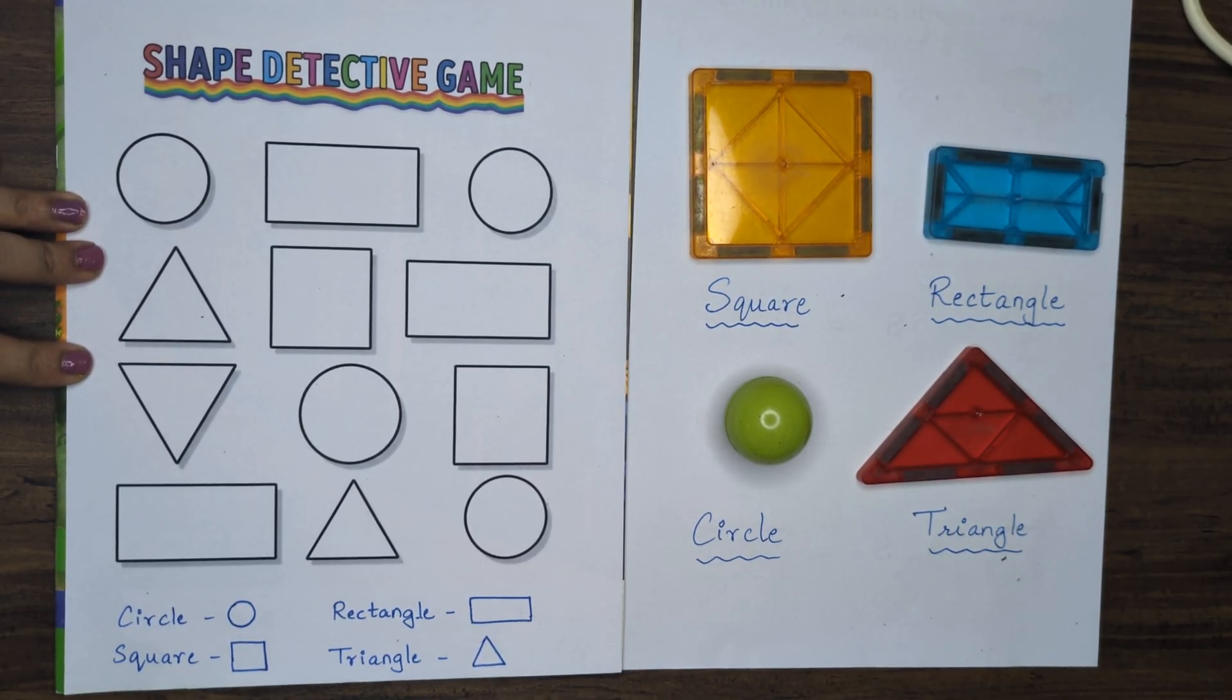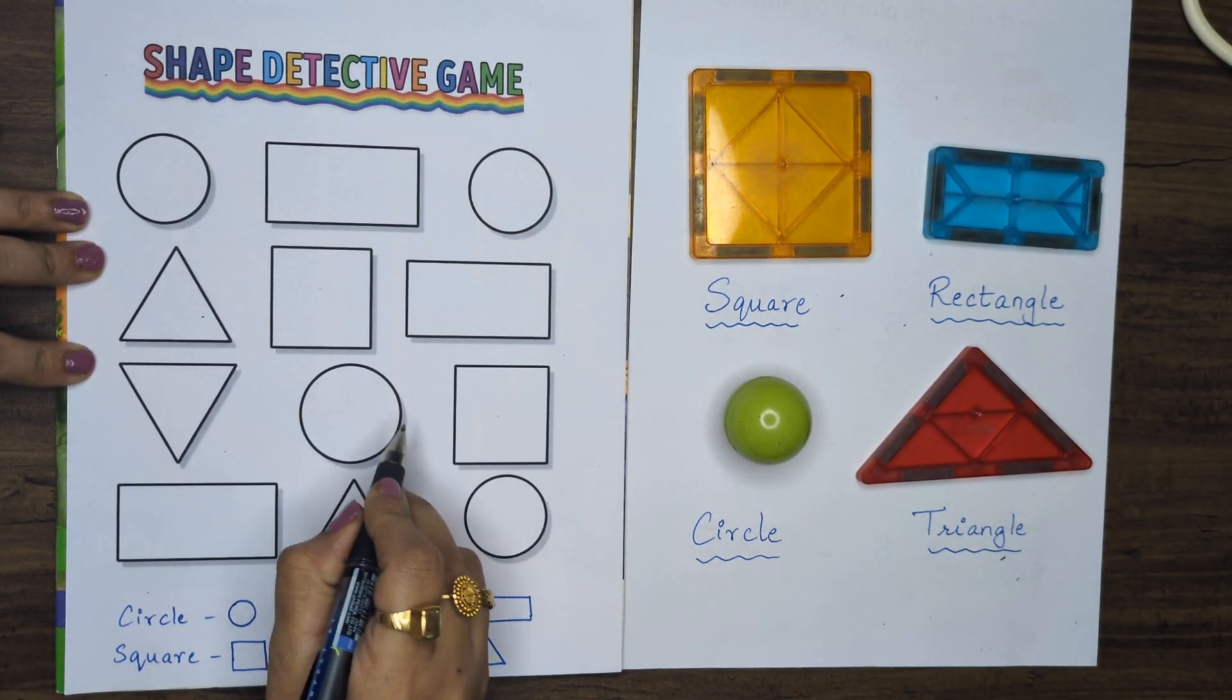The first question is, listen carefully kids. Draw a smiley around any one circle. I'm choosing this circle.